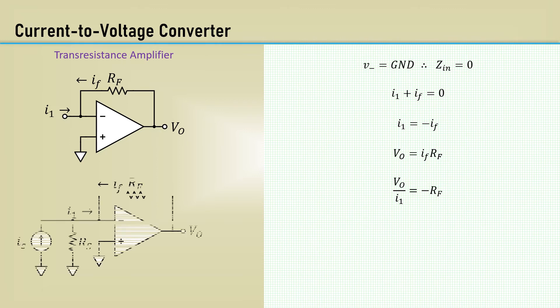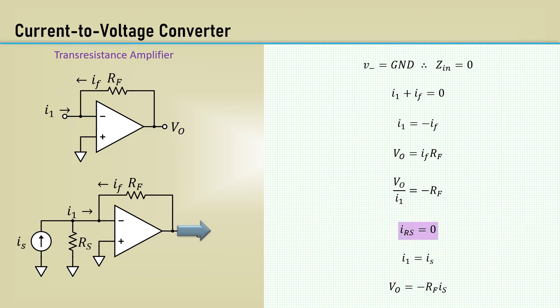Here's a current-to-voltage converter with a current source connected to its input. Because RS connects from a virtual ground to real ground, the current through RS is zero. It follows that I1 equals IS, and VO equals minus RF times IS. Thus, the output voltage is independent of RS. The takeaway from this exercise is that the current end, RS, is zero because one end is virtual ground and the other is at real ground. This will apply to our input bias cancellation example.